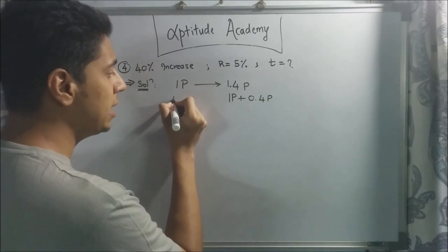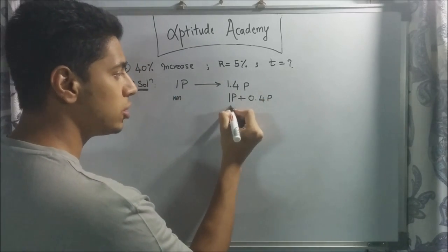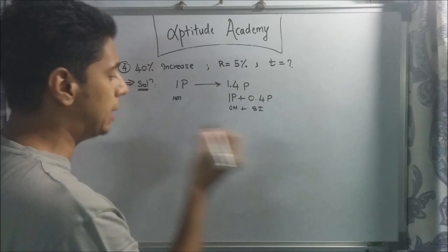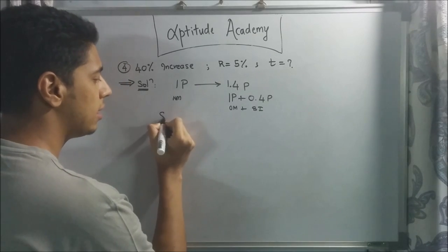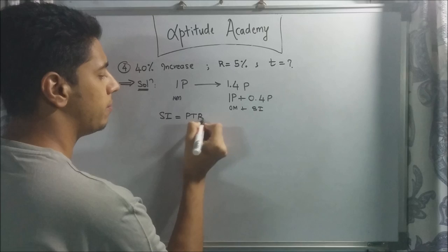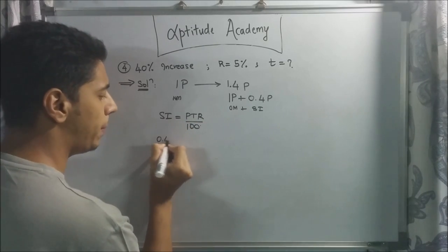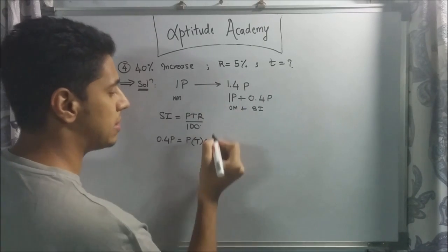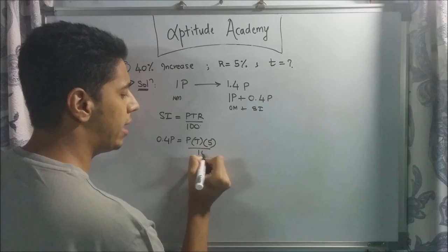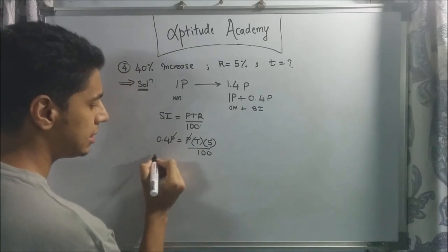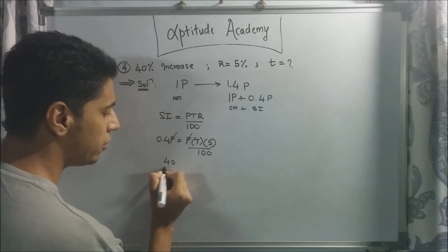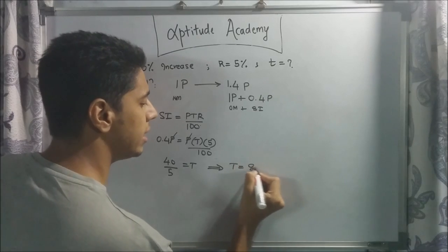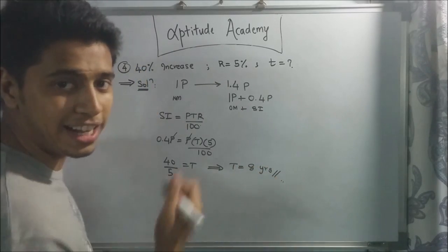Using the simple interest formula SI = P×T×R ÷ 100, we have 0.4P = P × T × 5 ÷ 100. P cancels out on both sides. So 0.4 × 100 = 5T, which gives 40 = 5T. Therefore T = 8 years. That is your final answer.